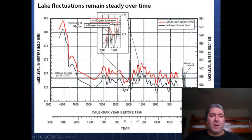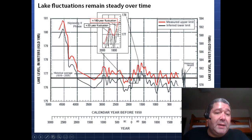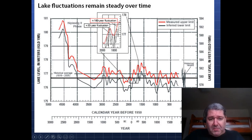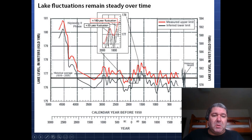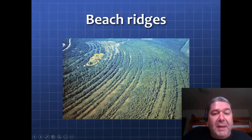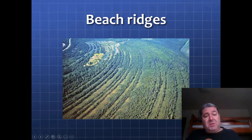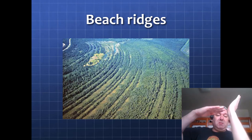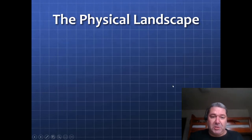Looking at lake level changes from 5,000 years before present to today, we see the Nipissing high stand and then our current level. We see not only 30-year fluctuations, but superimposed on those are 160-year fluctuation cycles. As evidence of this, we see former beach ridges — evidence of former lake levels — due to both higher and lower lakes and the land slowly rising around these lakes, creating series after series of beach ridges.